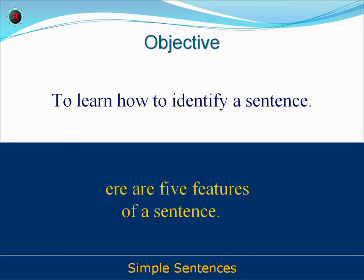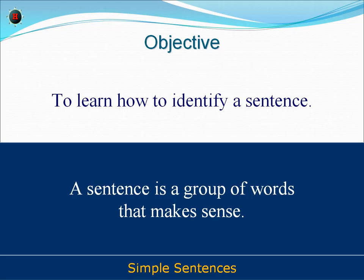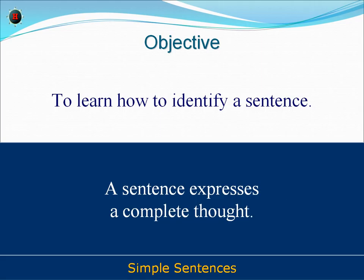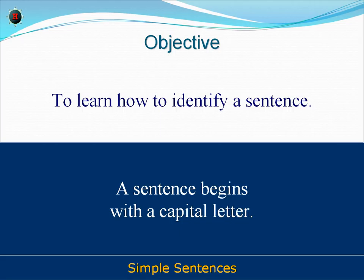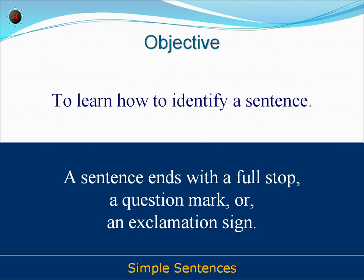A sentence is a group of words that make sense. A sentence expresses a complete thought. A sentence begins with a capital letter. A sentence ends with a full stop, a question mark, or an exclamation sign. A sentence has at least one verb — an action word.